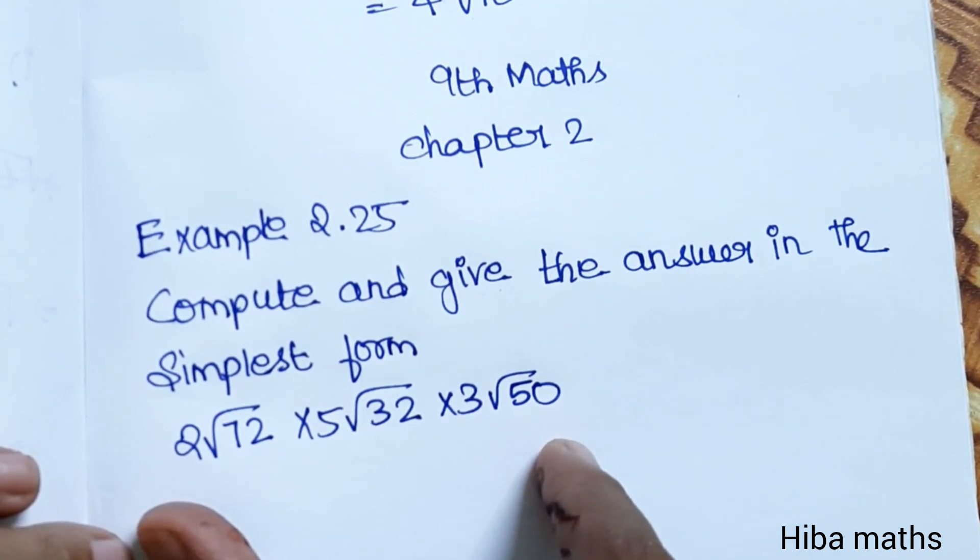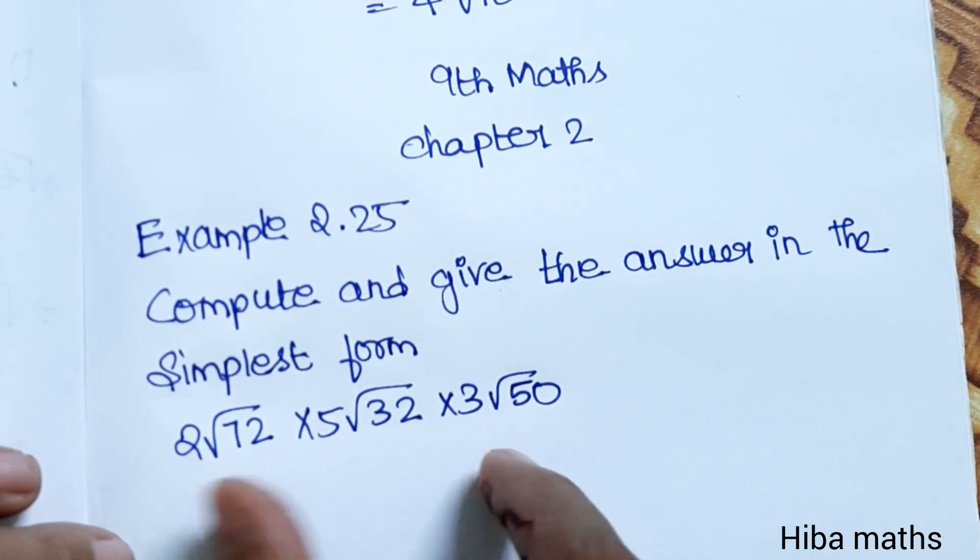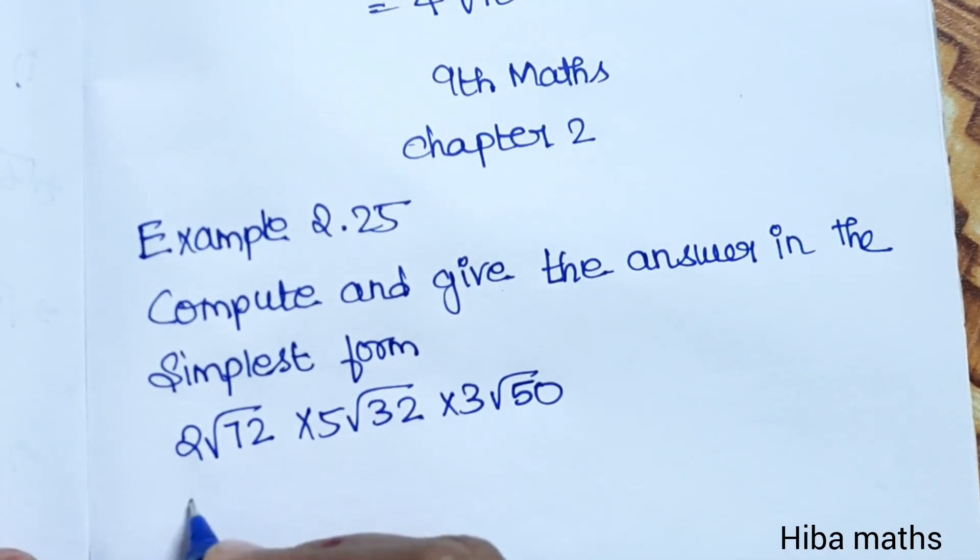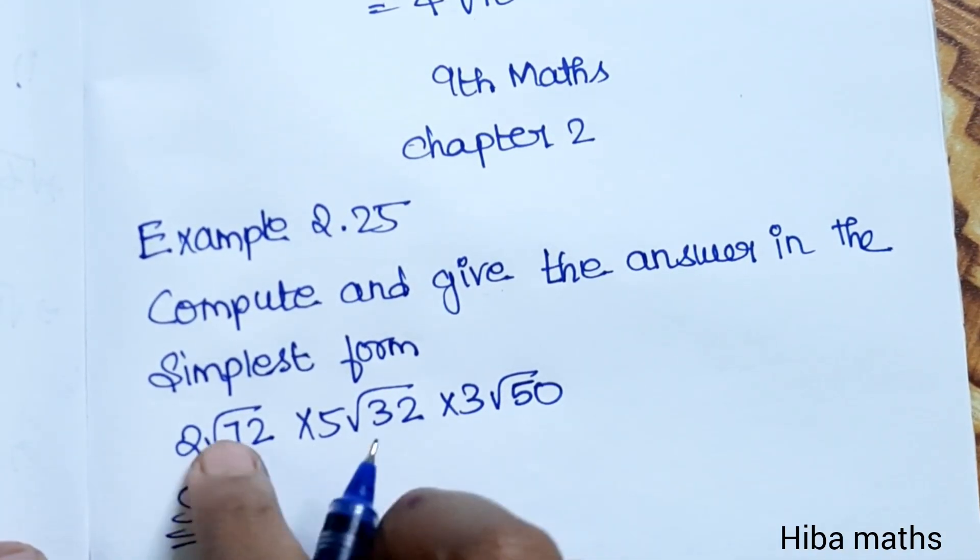So if we multiply the surds, we multiply to the simplest form. In the solution, we multiply the surds.